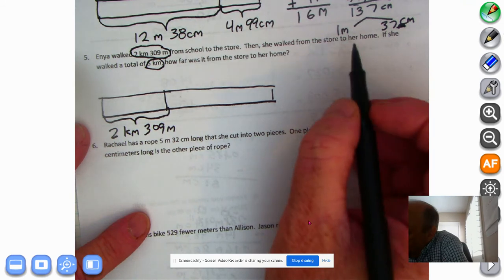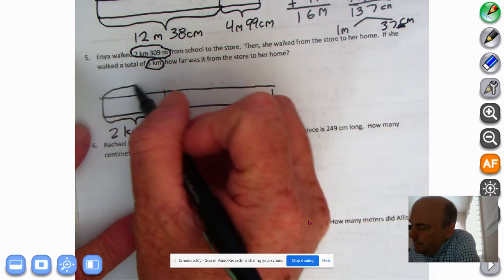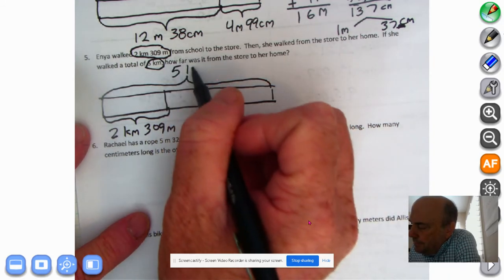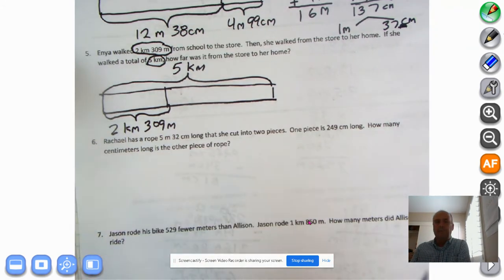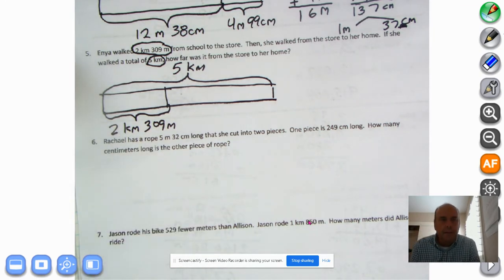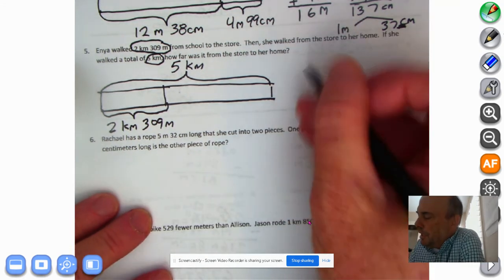The total amount she walked, if she walked a total of 5 kilometers, and this is what represents the total. Confusing, no? Yes. She walked a total of 5 kilometers, and part of that 5 kilometers was the 2 kilometers, 309 meters that she walked from school to the store. So now we have to do some subtraction.